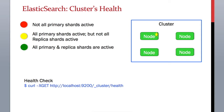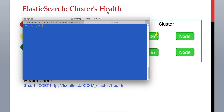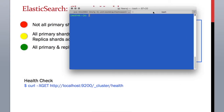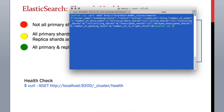Now let's check out how we can monitor the health of our cluster. Let's bring up the terminal and type the command: curl -X GET. Remember, this is the location and port of the Elasticsearch instance we installed in our previous lessons. We can invoke the API endpoint _cluster/health, which will show you the health of your cluster.